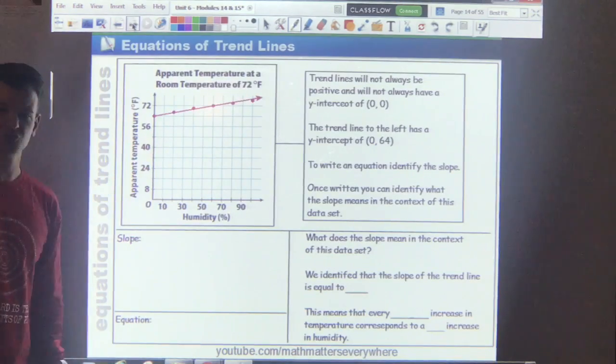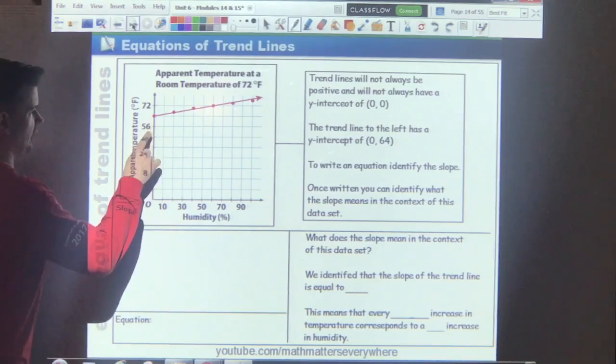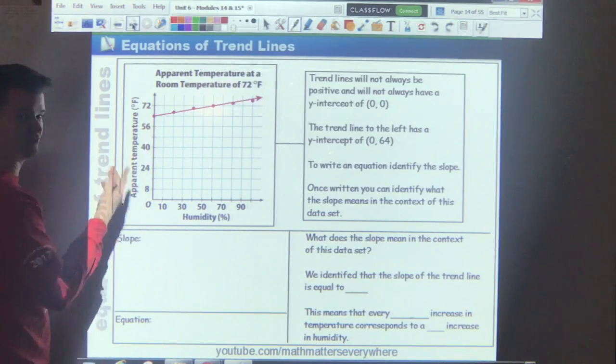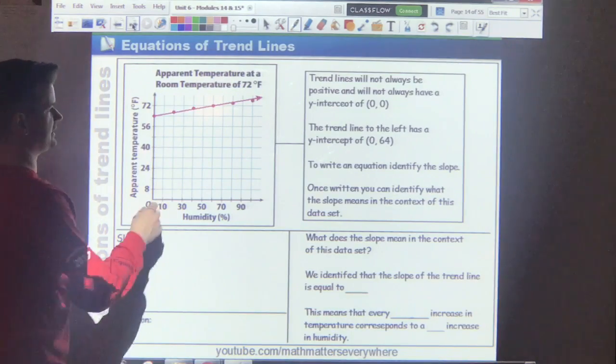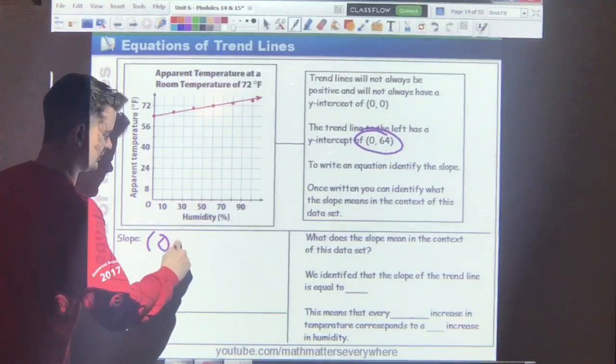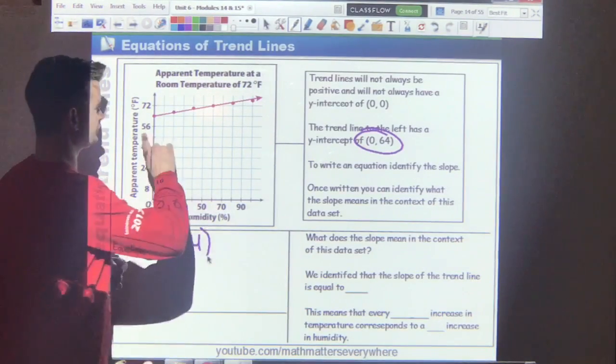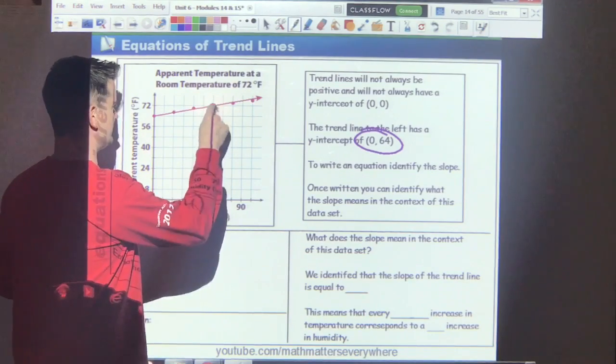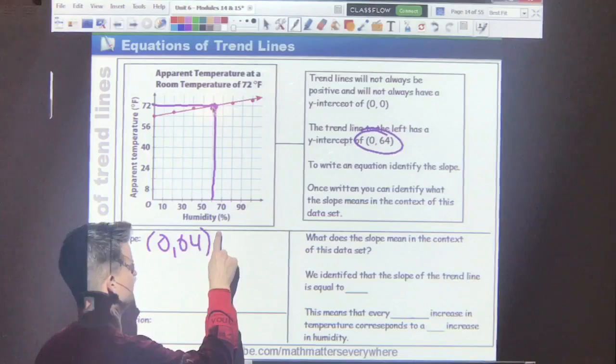But, I want to do an equation for this trend line. Notice that this does not have a y-intercept of zero. But, the y-intercept falls in between 56 and 72. So, I'm going to say 16 is the distance between them. So, this is going to be 64. That's my y-intercept. It also gives me one coordinate pair for my slope. I need one more so it looks like, hey, it just so happens that this right here is a good point. 60 comma 72.